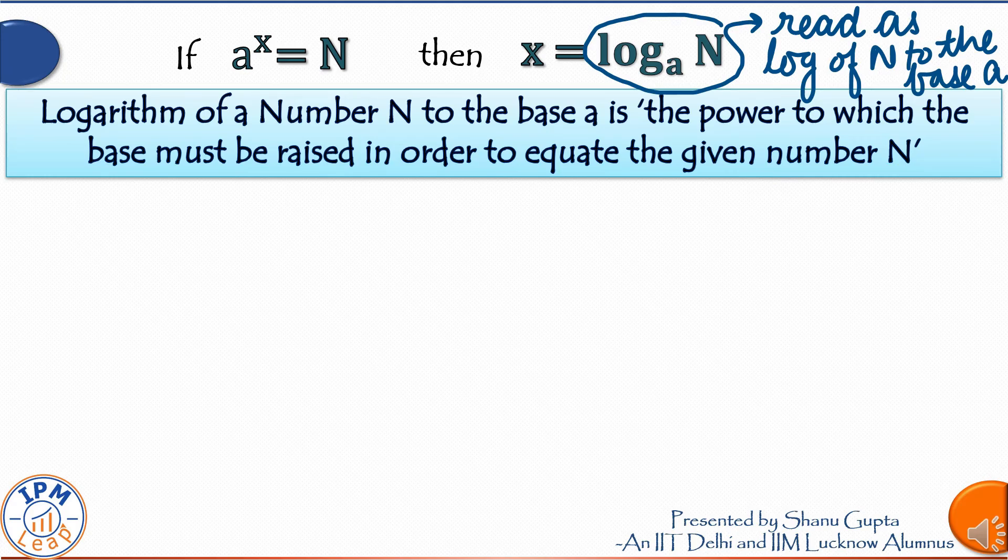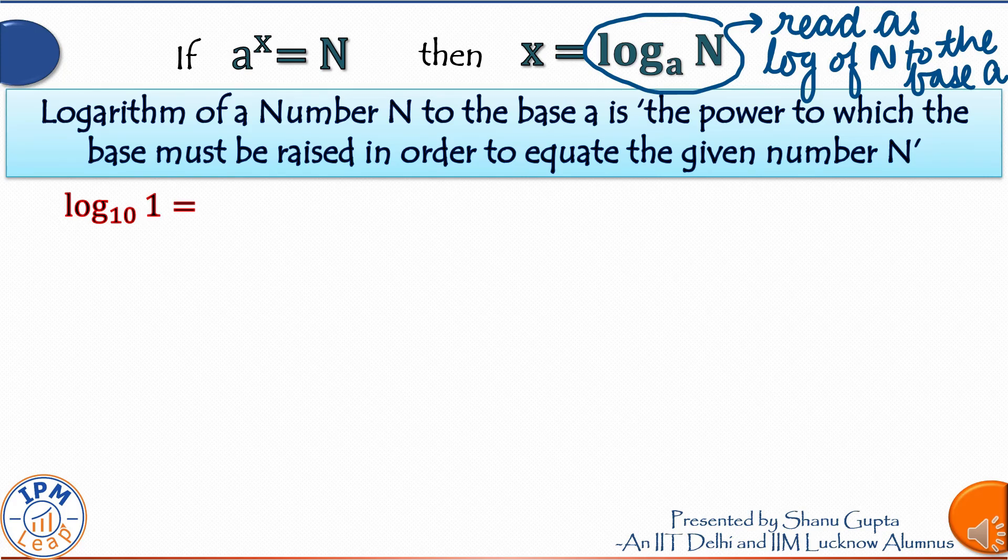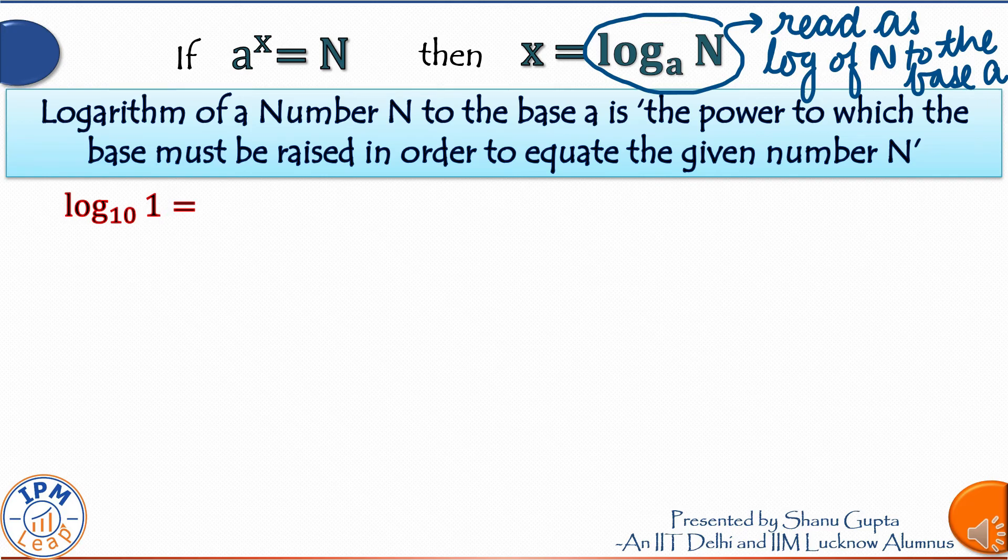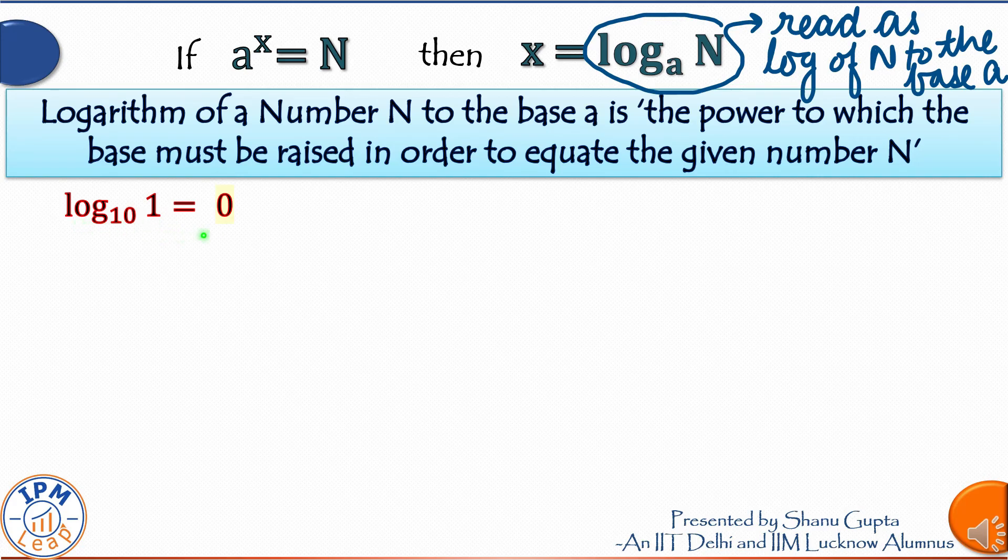Supposing we have log 1 to the base 10. 10 raised to what power gives you 1 as a result? 10 raised to the power 0. So the value of this log is 0. Log of 1 is always 0 for any base.